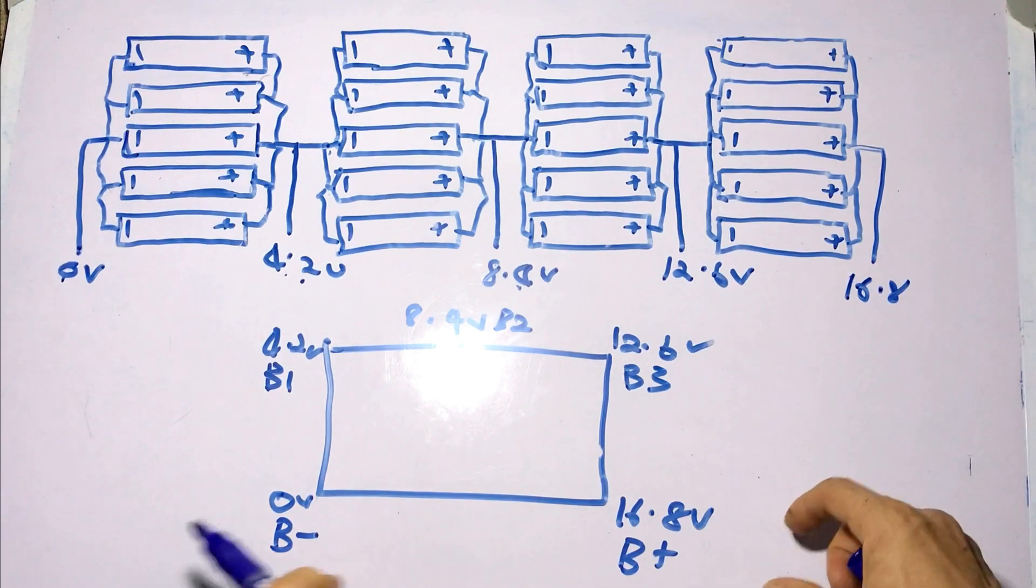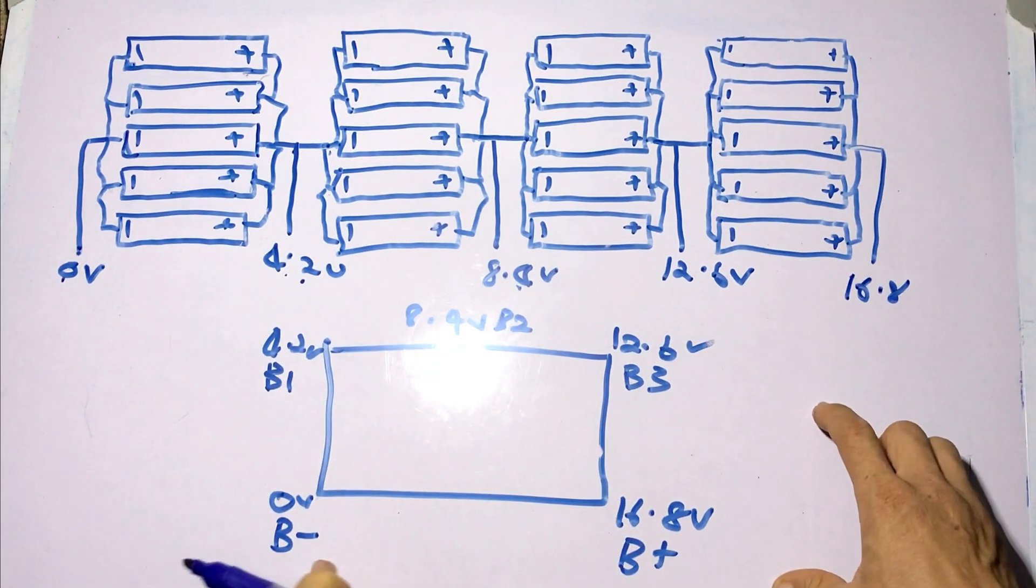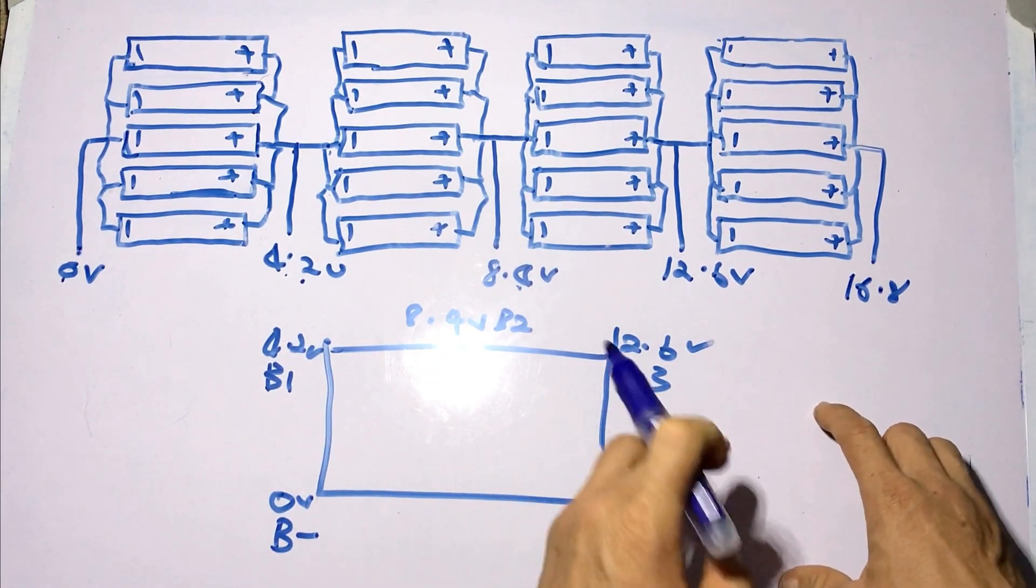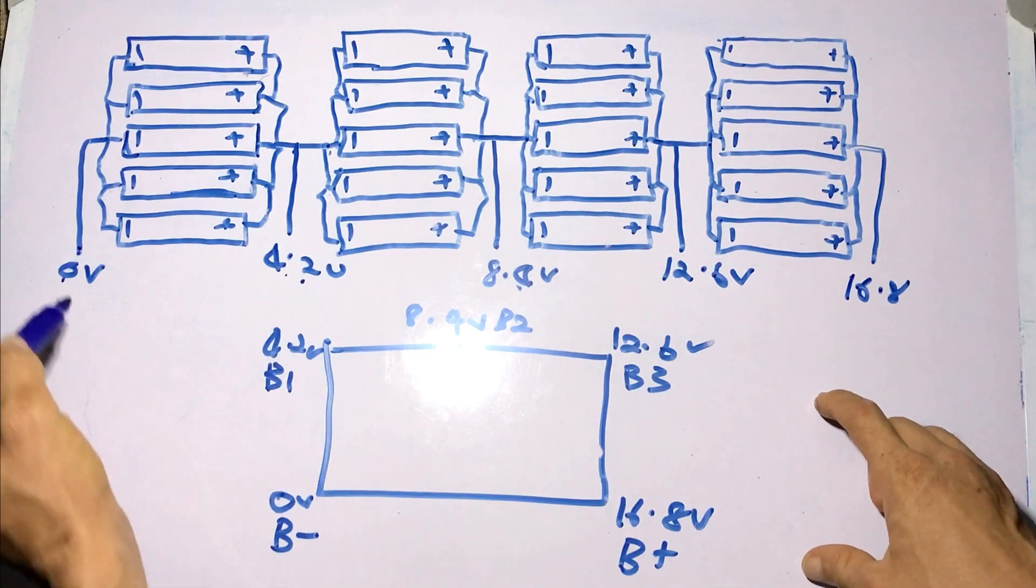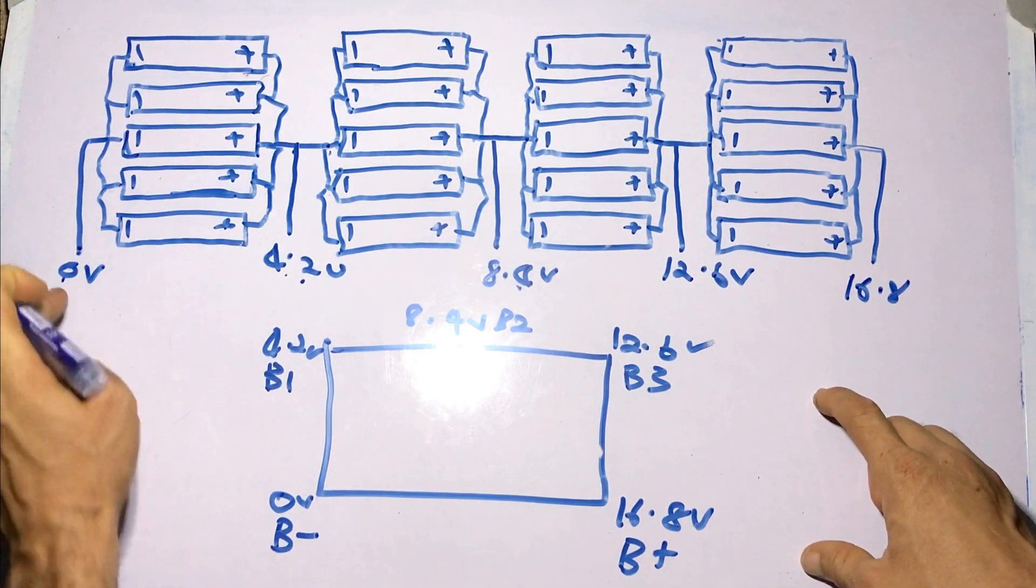So when you have the various connections labeled using these B minus, B plus, and so on, you know that your B minus is your zero volts.